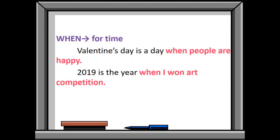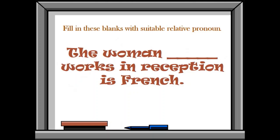When is used for time. 2019 is the year when I won art competition. So these were your relative pronouns. One is used for telling us about the persons. One is used to tell us about the things. Then possession, then time, and place. Now, you have to memorize that where these relative pronouns use.